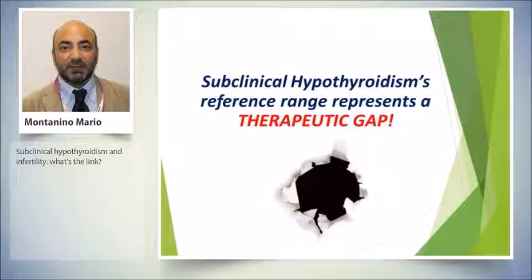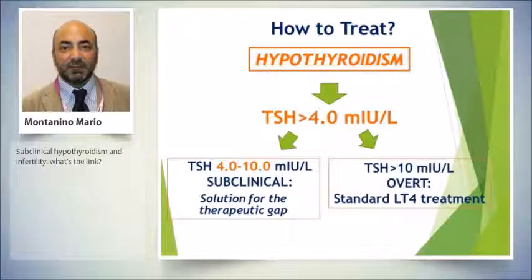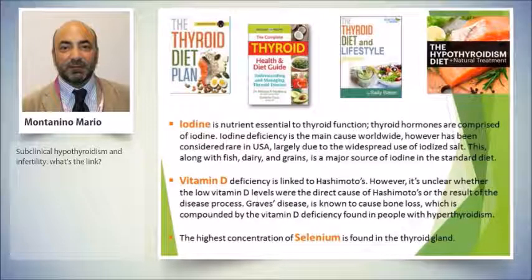Treatment for overt hypothyroidism is clear — TSH above ten, levothyroxine is indicated. For subclinical hypothyroidism, we treat our patients based on empirical experience, but there is a therapeutic gap. Beyond levothyroxine, don't forget the role of diet. Diet is crucial for normal thyroid function. We all know that iodine is essential for thyroid function, and in Western countries and the US, diet is the essential source of iodine, though this may differ in other countries.